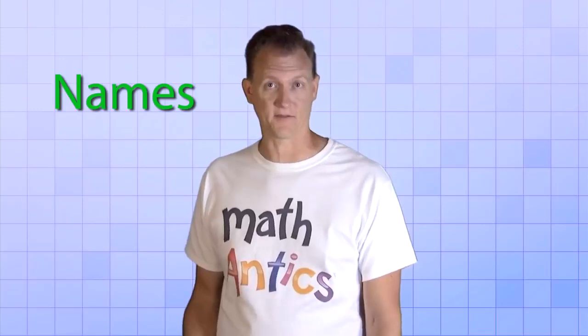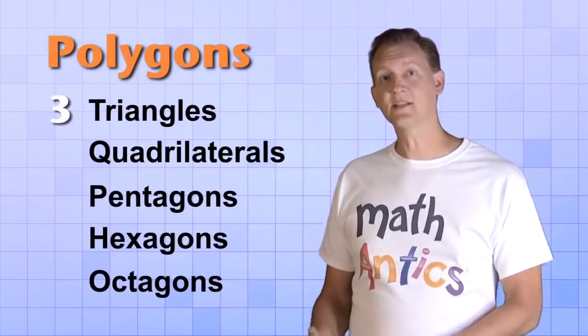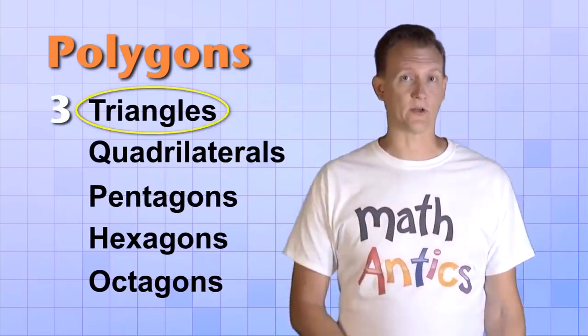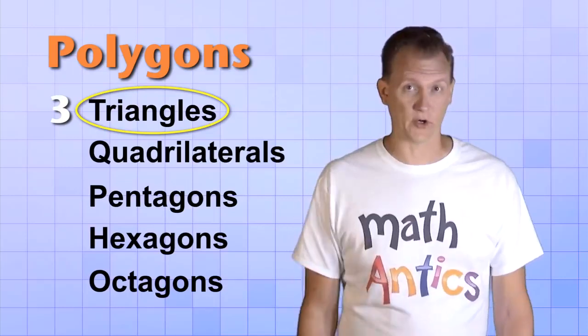The last thing I want to mention is that some polygons have special names depending on how many sides they have. Here's a list of the most important ones to know. Three-sided polygons are called triangles. Triangles are so important in geometry that they'll get a whole video of their own.